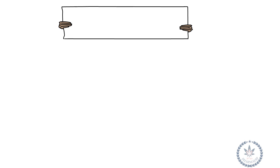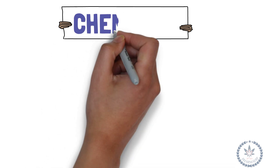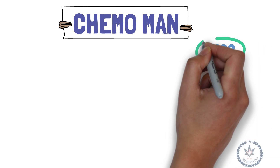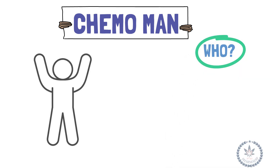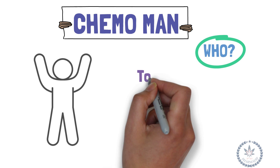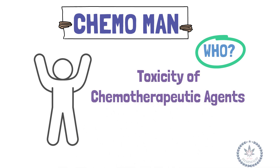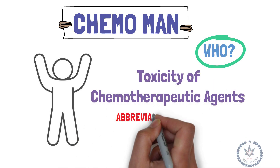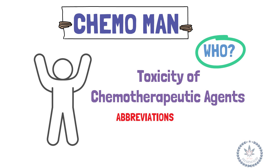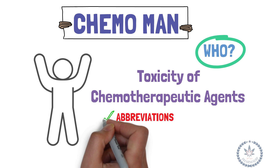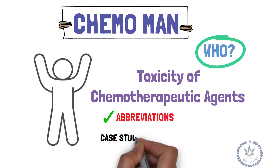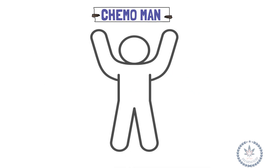Now this video is all about Chemo Man. Who is Chemo Man? What does Chemo Man stand for? Chemo Man basically represents the toxicity of chemotherapeutic agents. It has abbreviations that represent the drug name, and the position represents the area of toxicity. At the end of the session you will have a Q&A session that will help you analyze and remember what you have understood. So let's go.